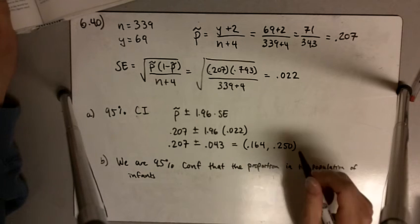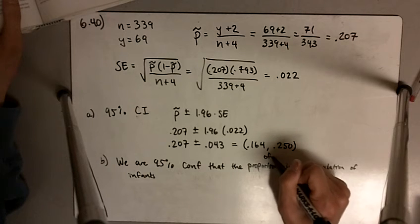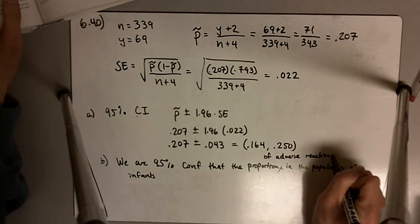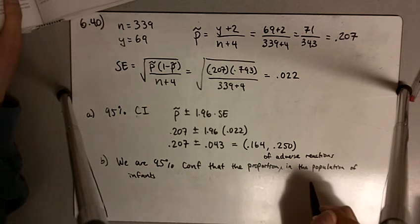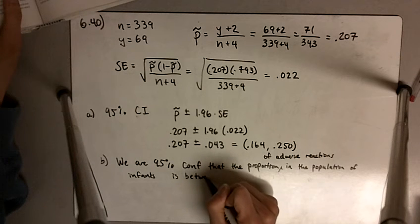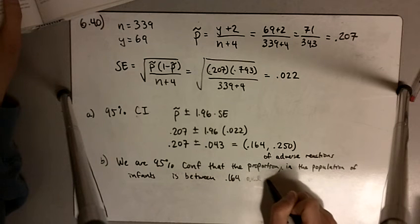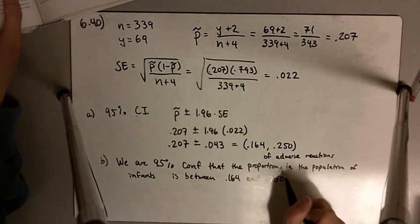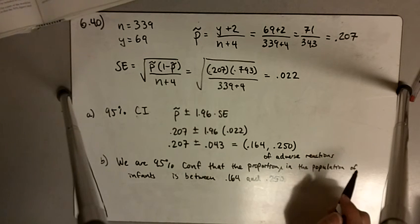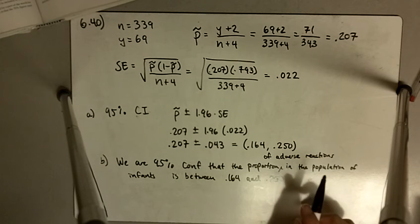I should say the proportion of adverse reactions in the population of infants is between 0.164 and 0.250. So that means we're 95% confident that the probability of having an adverse reaction is going to be between 0.164 and 0.250.